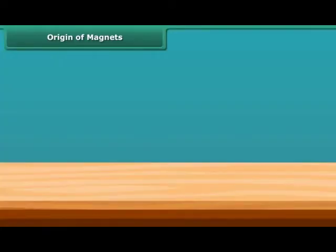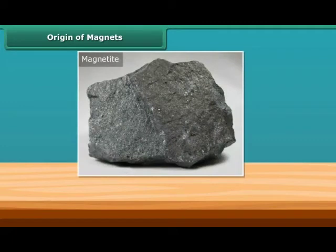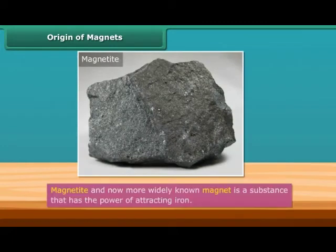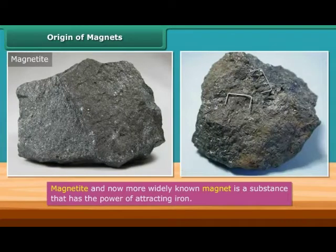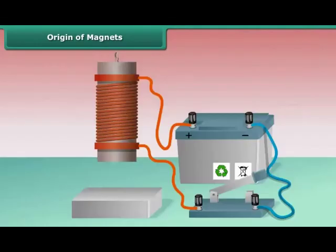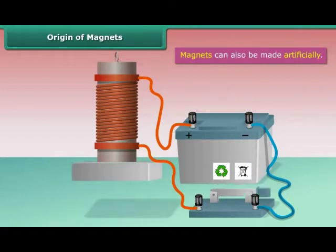Origin of Magnets. Magnetite is a natural magnet and contains iron. In the later days, this was more widely known as a magnet. A magnet is a substance that has the power of attracting iron. Magnets can also be made artificially. However, the process of making artificial magnets is a recent discovery.